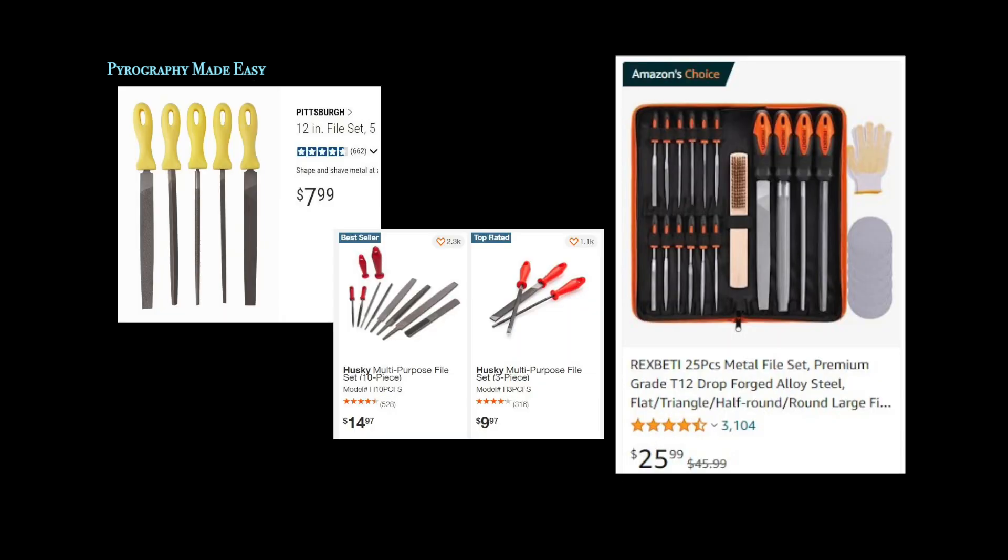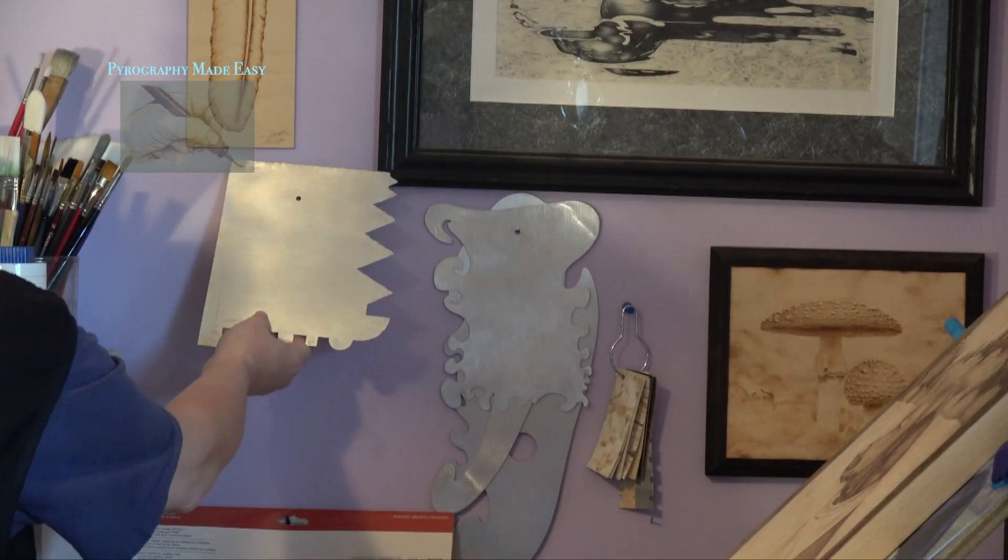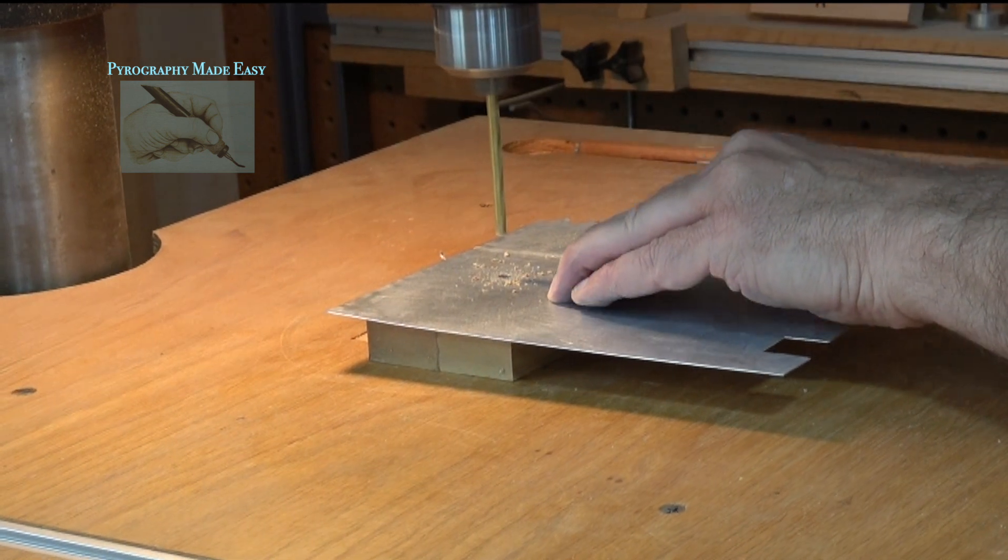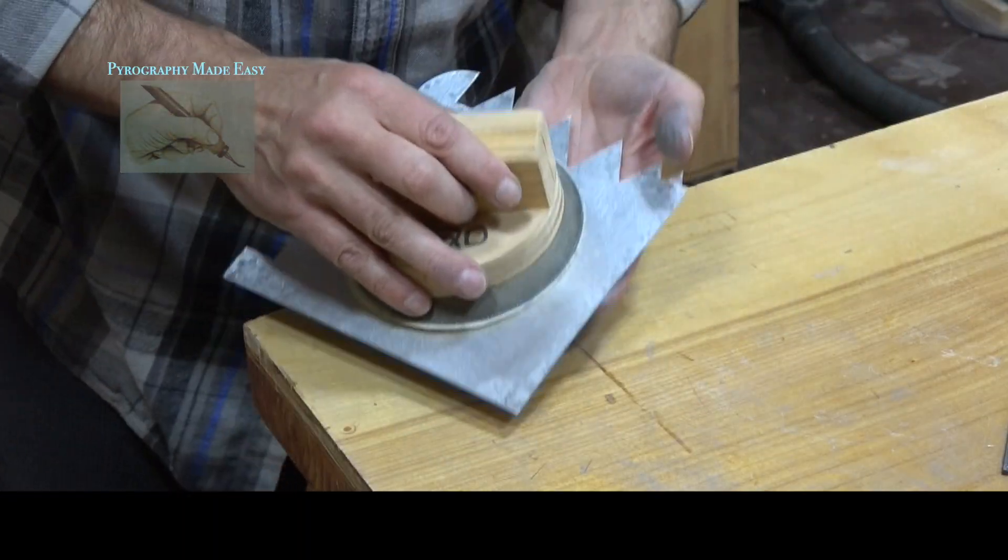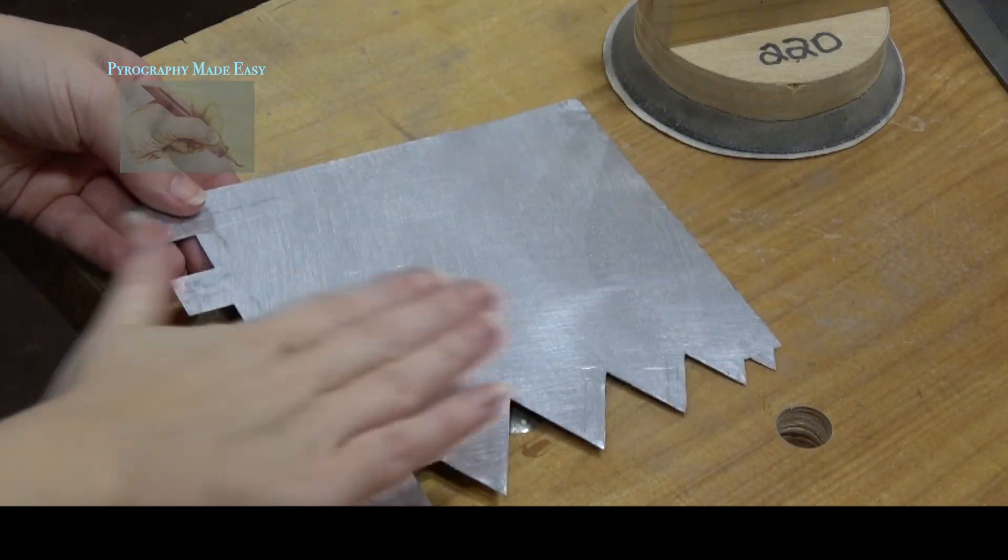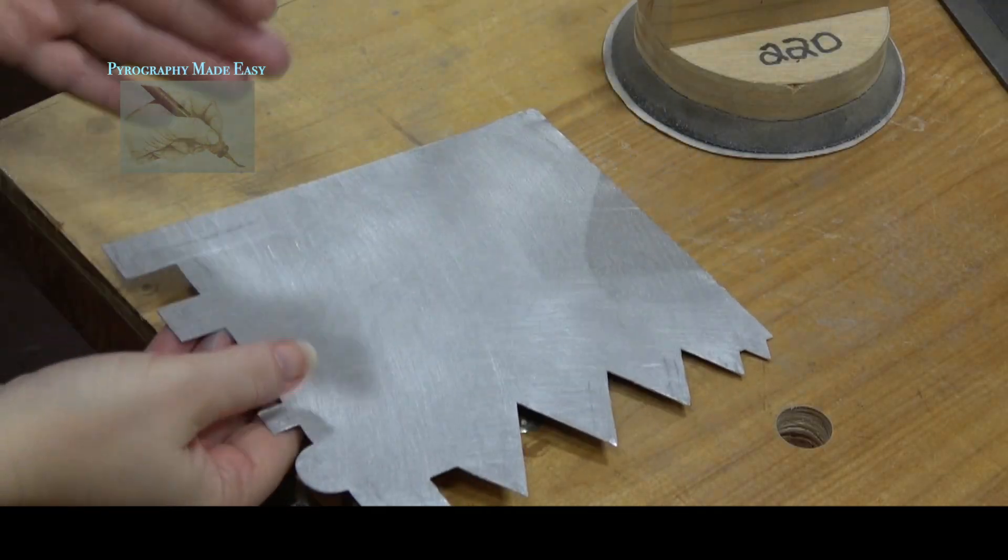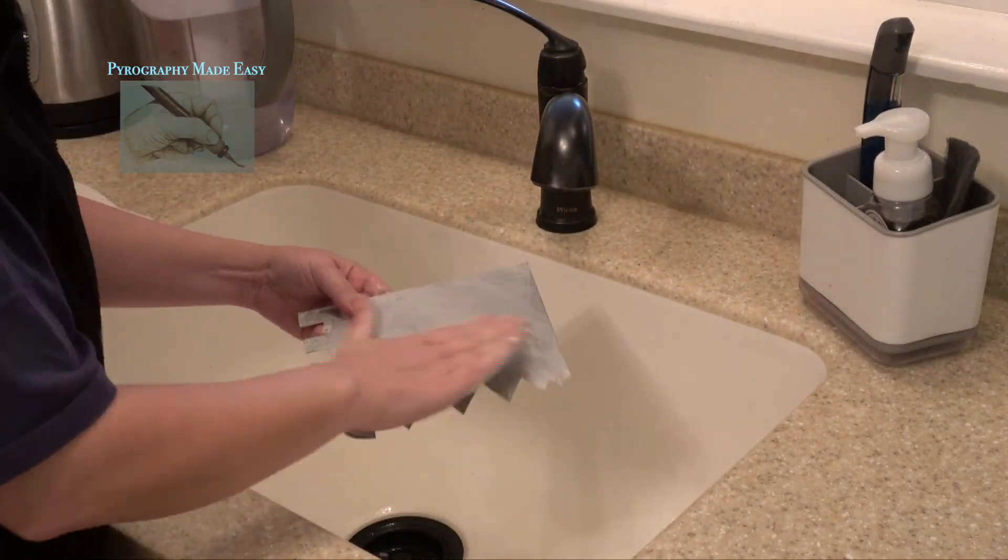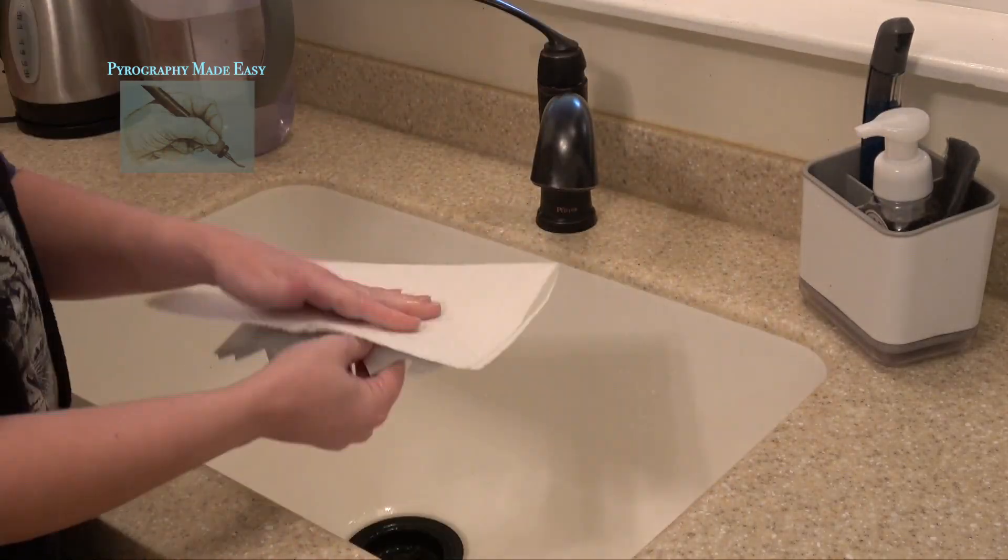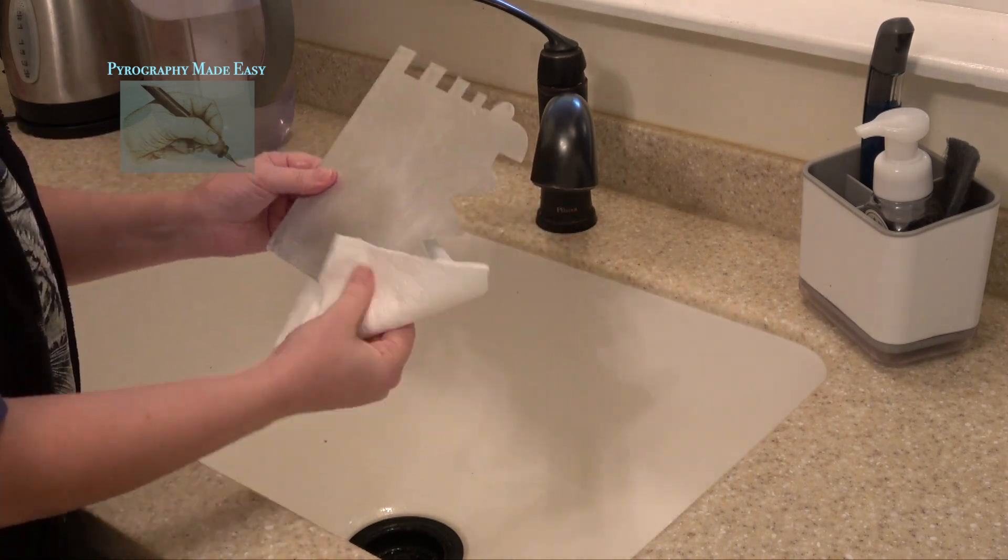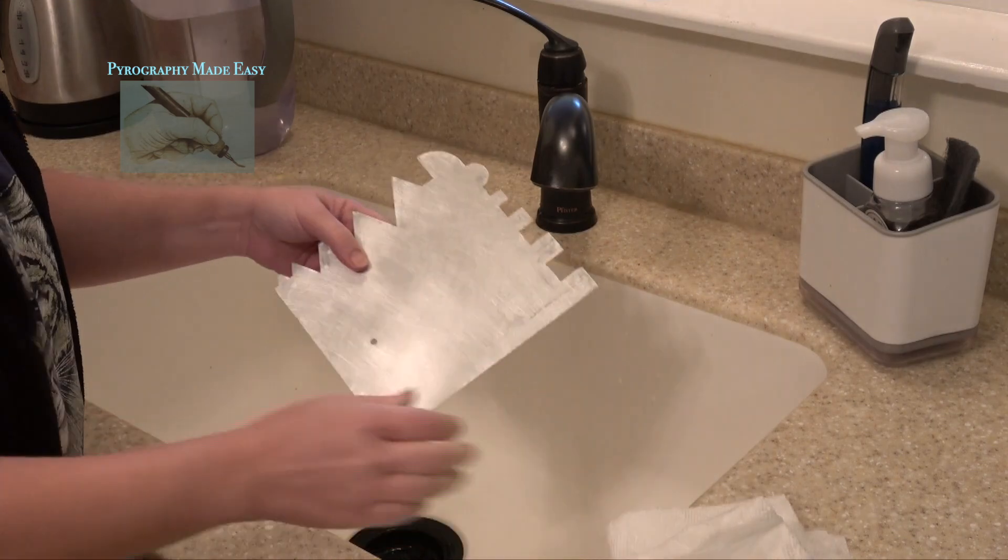I like to hang my shields on the wall so Todd drills a hole one to two inches from the edge. Then he sands over the hole to remove any burrs. All of the sanding produces a layer of silvery dust on the shield. To remove the dust just wash with soap and water. Then let it either air dry or dry it with a towel. Once dry it is ready to use.